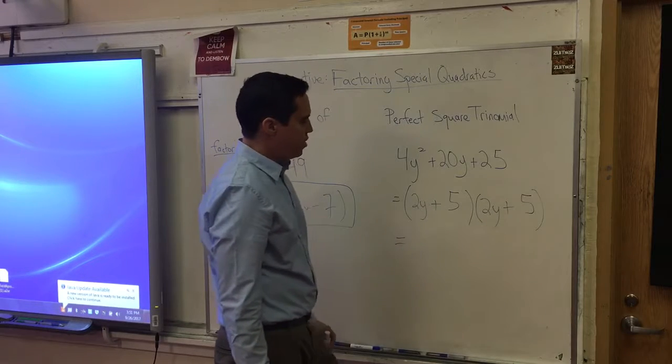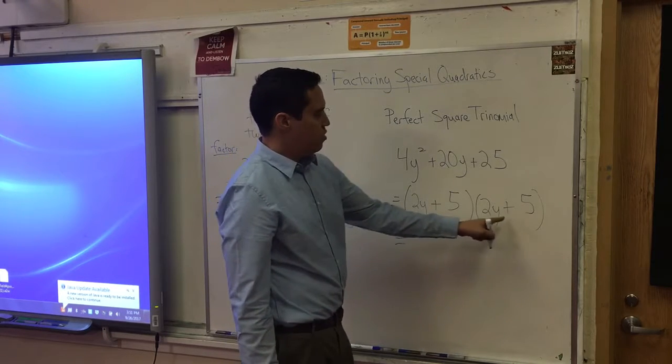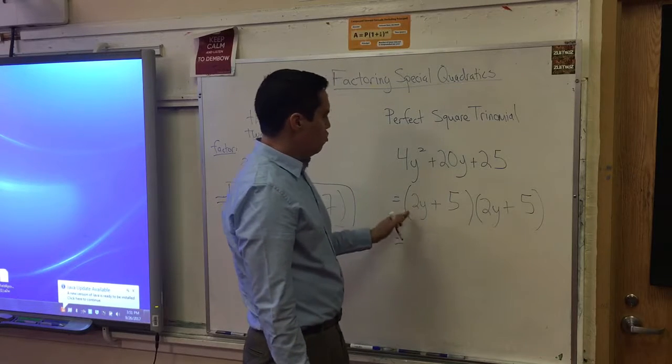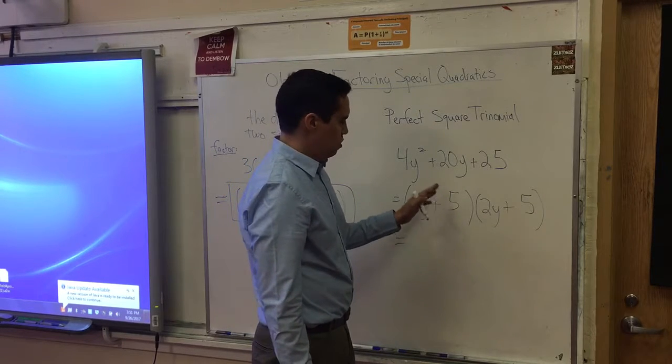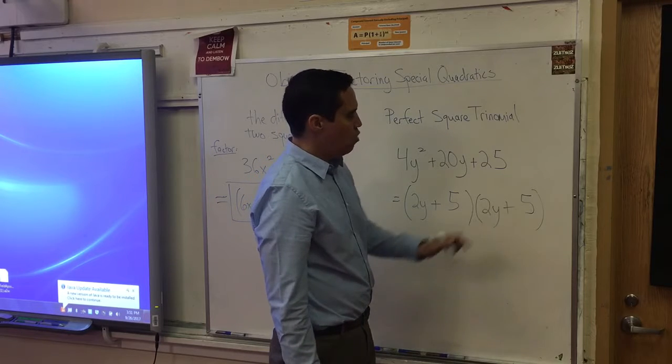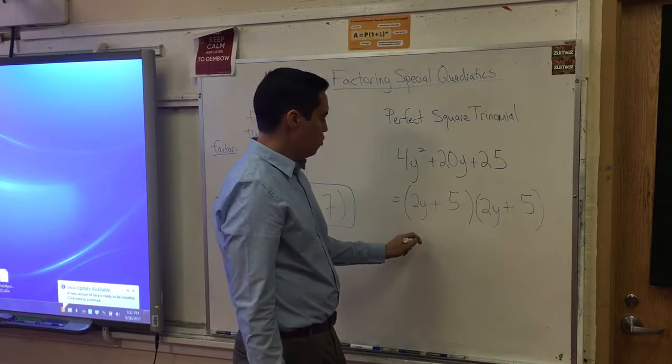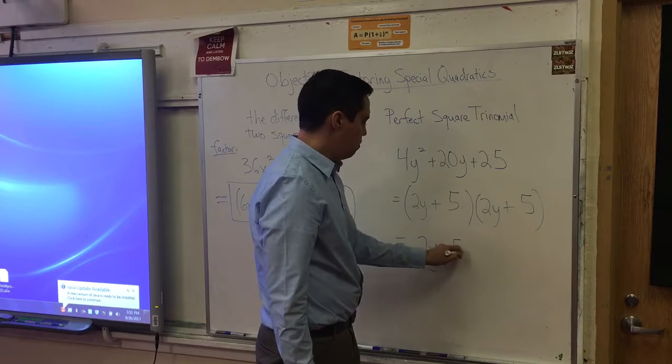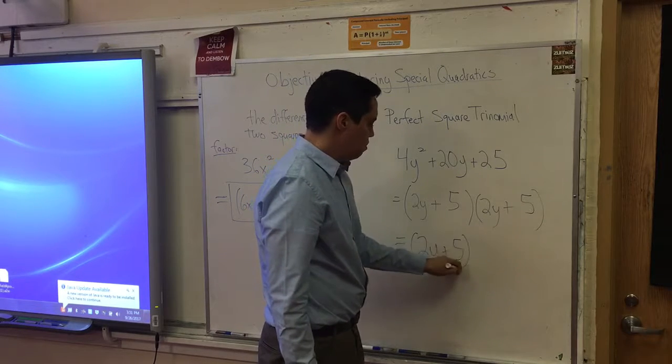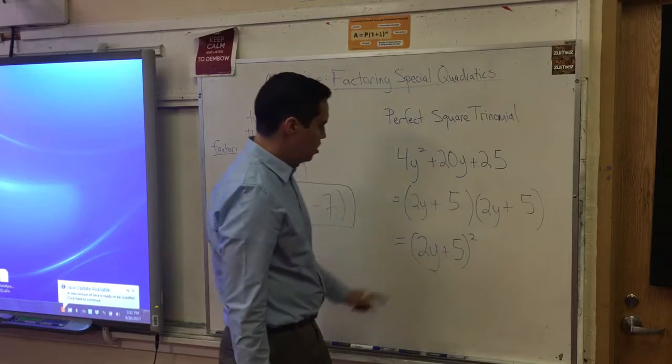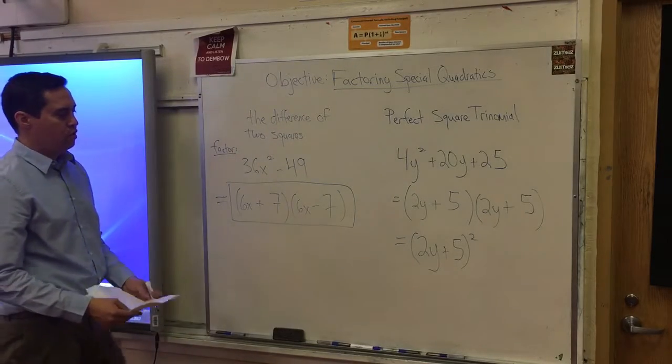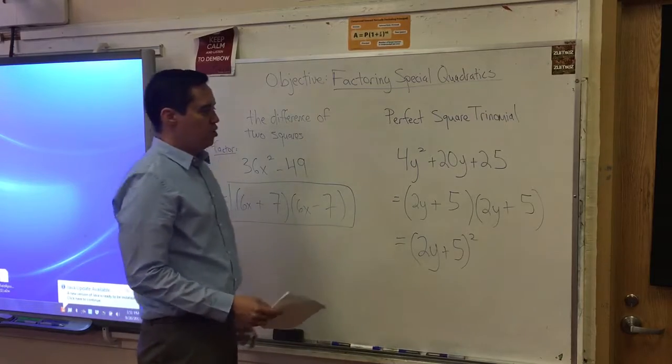But to fully factor this, notice that it's the same thing twice. Like x times x, right? 2y plus 5 quantity times another 2y plus 5. So we can further simplify this by saying 2y plus 5 quantity squared. This is the most simplest form of the perfect square.